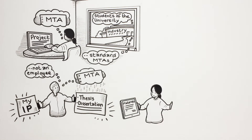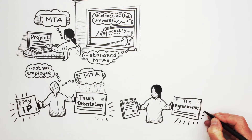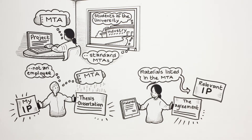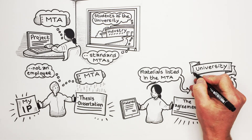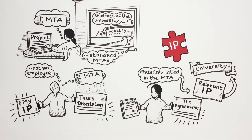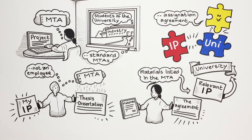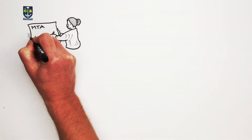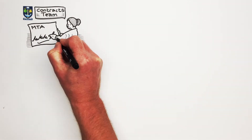However, the use of these materials by students may be in breach of the agreement. Should a student wish to use any material listed in the MTA, they would be required to assign the relevant IP generated through the MTA to the university. The assignment of such IP generated by the student can be assigned to the university by an Assignation Agreement. MTAs can only be signed on behalf of the university by certain individuals in the University of Glasgow contracts team. See the links to the relevant personnel below this video.